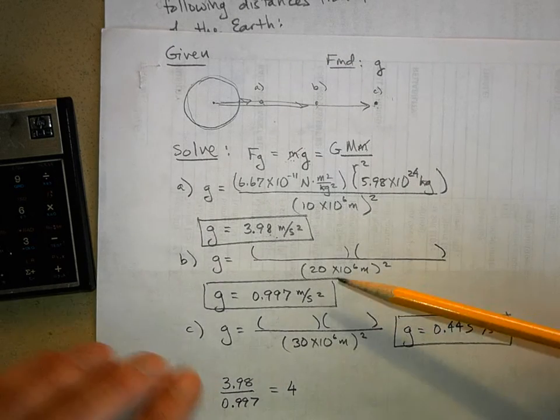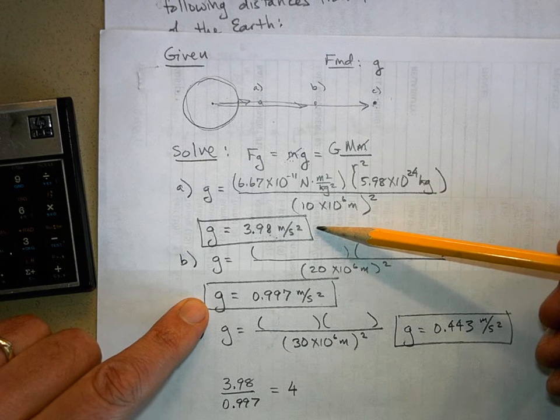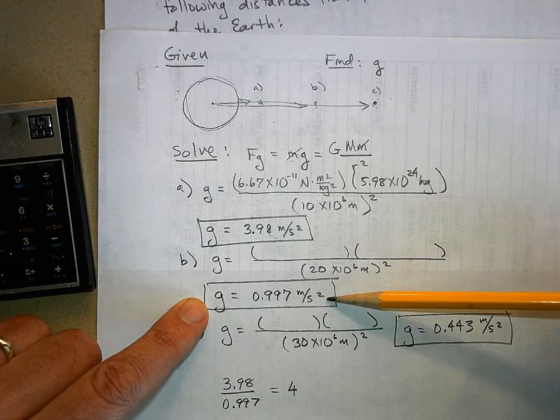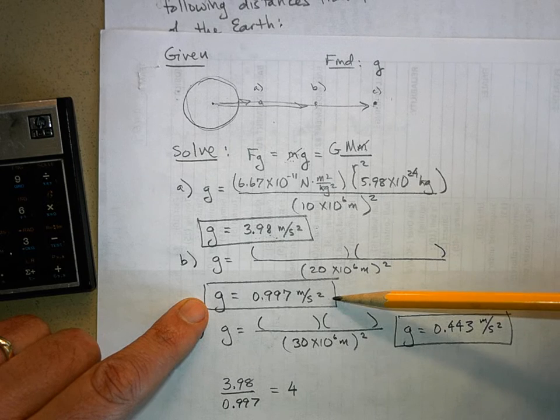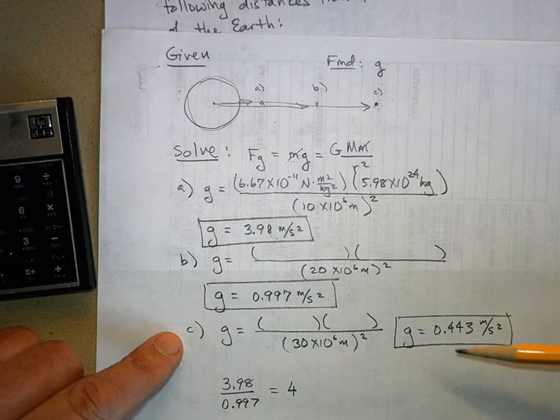So the gravity we had at part A, when I go twice as far away, I have one-fourth the gravity that I started with in part A.